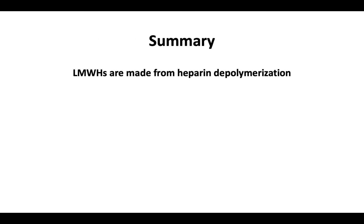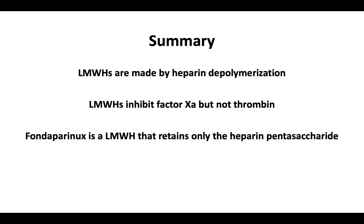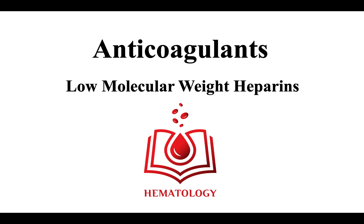In summary, low molecular weight heparins are made from heparin depolymerization. Low molecular weight heparins inhibit factor Xa, but not thrombin. The ultimate low molecular weight heparin is fondaparinux, which retains only the heparin pentasaccharide binding site. This concludes our video on anticoagulants with a focus on low molecular weight heparins.